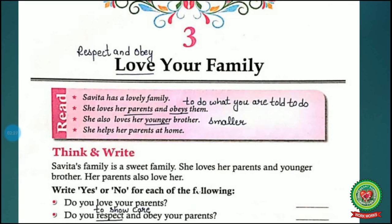The first line is: Savita has a lovely family. There is a girl whose name is Savita, and she has a lovely family. She loves her parents and obeys them. The word 'parents' means father and mother. Now underline the word 'obey' and write its meaning: to do what you are told to do. She also loves her younger brother. Underline the word 'younger' and write its meaning: smaller — S-M-A-double-L-E-R — but remember, younger means smaller in age.